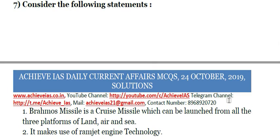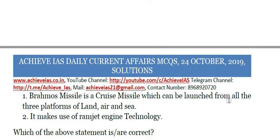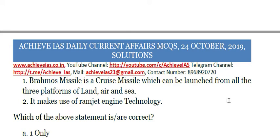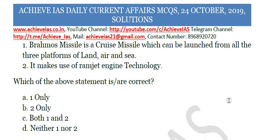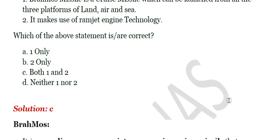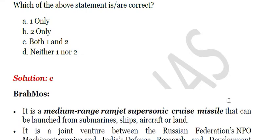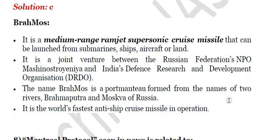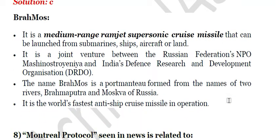Next, consider the following statements. First, BrahMos Missile is a cruise missile which can be launched from all three platforms of land, air, and sea. Second, it makes use of Ramjet engine technology. Both statements are correct. It is a medium-range cruise missile that can be launched from land, air, and sea, and it uses Ramjet engine technology. It is a joint venture between a Russian company and DRDO. The name BrahMos is a portmanteau formed from the names of two rivers — Brahmaputra and Moskva of Russia. It is the world's fastest anti-ship cruise missile in operation.